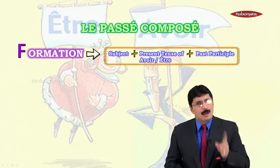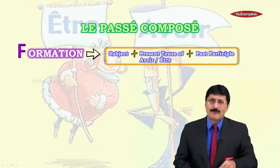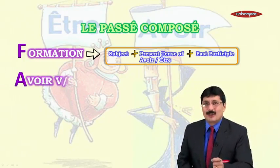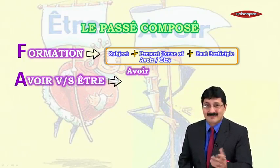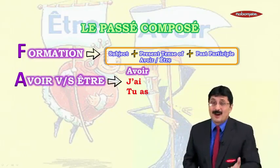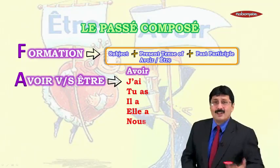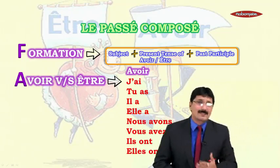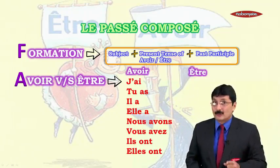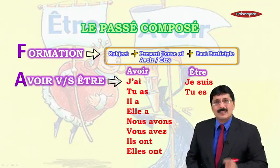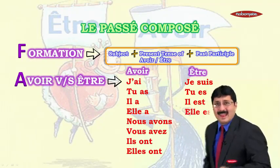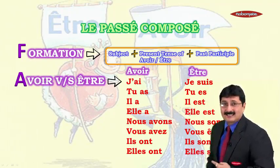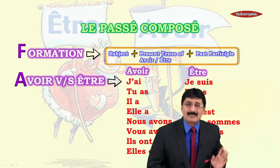Now, do we know the present tense conjugation of avoir and être? Let's have a look. Avoir: je, tu, il/elle, nous, vous, ils/elles — absolutely! And être: je suis, tu es, il/elle est, nous sommes, vous êtes, ils/elles sont — fantastic, my dear friends, we know Step 2!